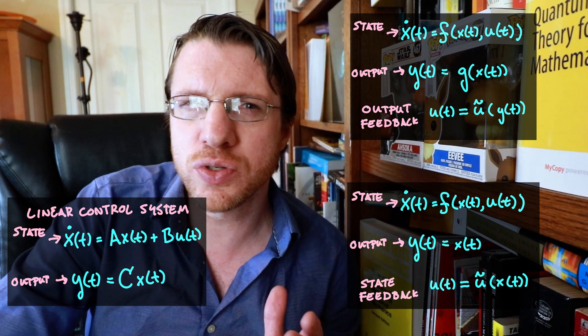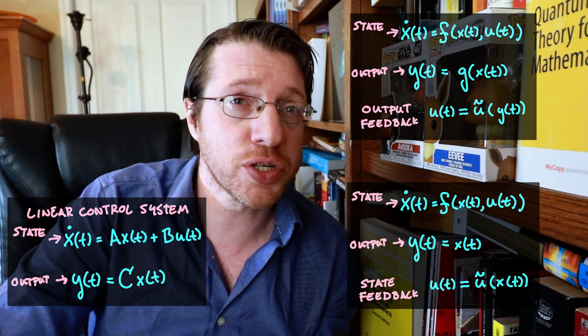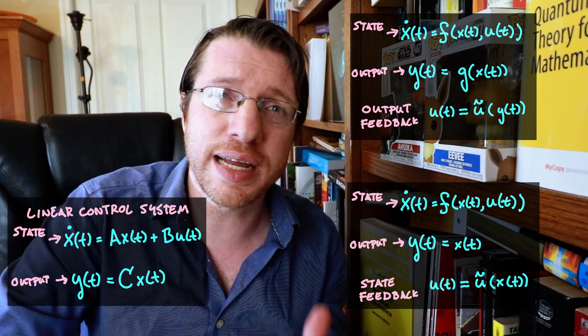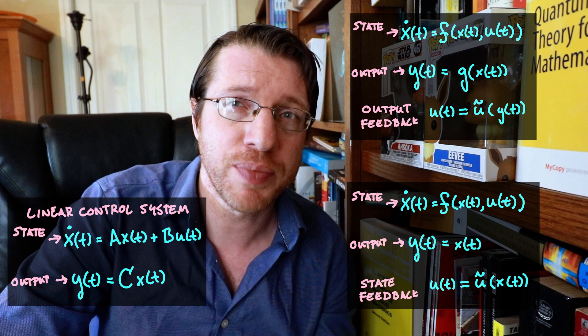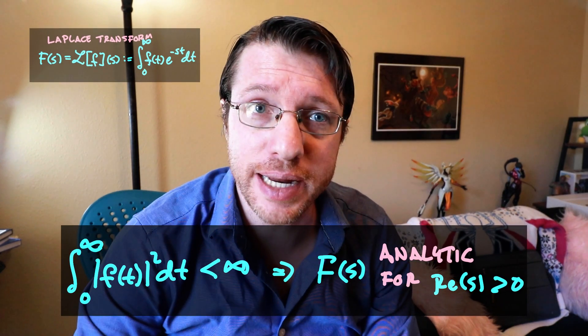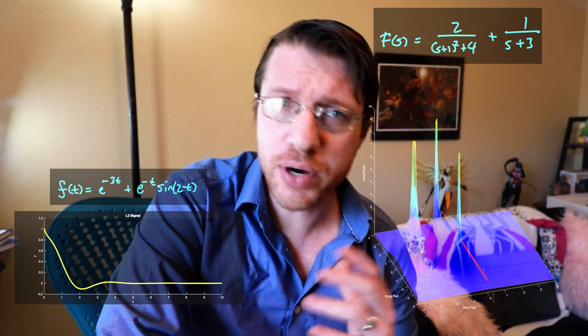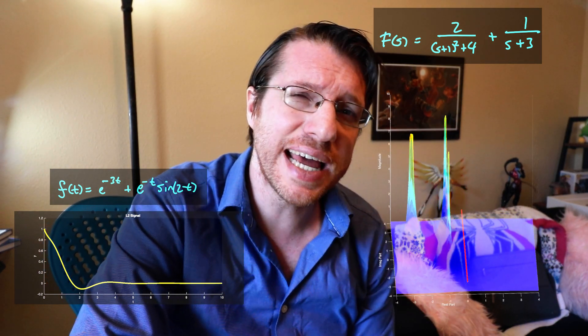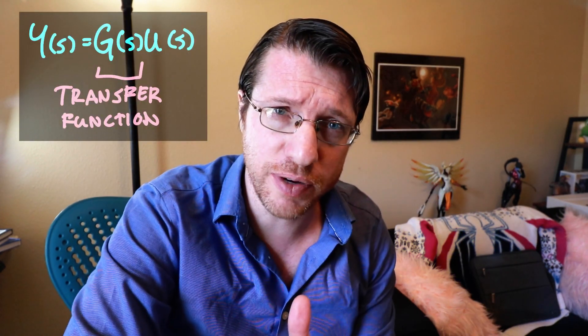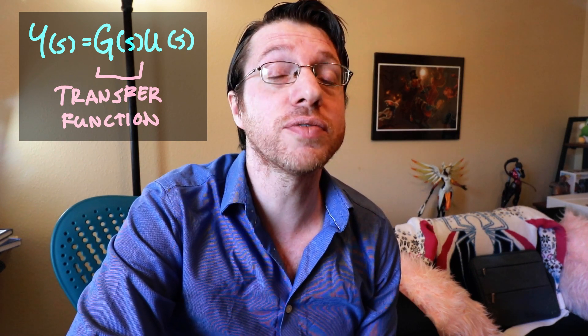In this setting, we can use tools from linear systems theory to describe the response of a system to various control inputs. This largely happens through the Laplace transform, which reduces the study of a control system to that of its transfer functions — which, from the mathematical side of things, is a multiplication operator. The Laplace transform transports L2 of zero to infinity signals to functions that are analytic in the right half plane, and this transformed signal resides in what is called the Hardy space of the half plane. The operation taking the control input to the system output is then reduced to multiplication by a rational function.